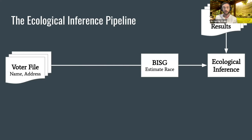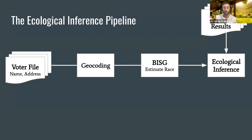We can use BISG to estimate the race of voters. BISG is a well-established tool from biostatistics and political science for estimating the race of individuals based on their surnames and where they live. We can't run BISG directly on the voter file because BISG requires entering voters' locations as latitude-longitude coordinates. So to get these coordinates from voters' addresses, we need to do what's called geocoding. The full pipeline is: first geocode the voter file, then run BISG to estimate race, and only then run ecological inference.